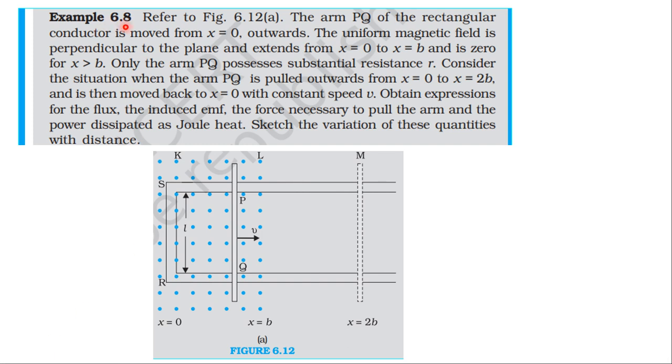This is electromagnetic induction Example 6.8. The problem describes a rectangular conductor where arm PQ is moved from x equal to 0 outward. The uniform magnetic field B is perpendicular to the plane and extends from x equal to 0 to x equal to b, and is zero for x greater than b.